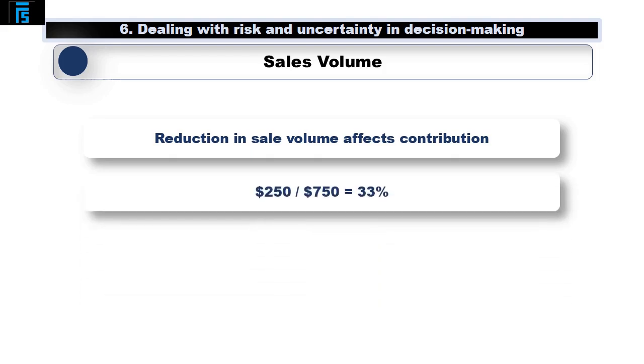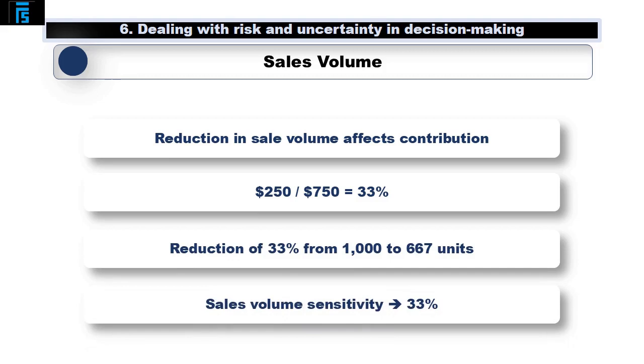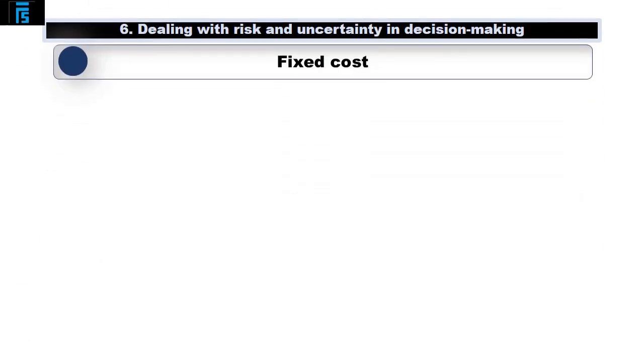Contribution and so sales volume would need to fall by $250 over $750 is 33% to eliminate profits. This would mean a reduction from the current 1,000 units to 667 units per week. Jack is 33% sensitive to sales volume.